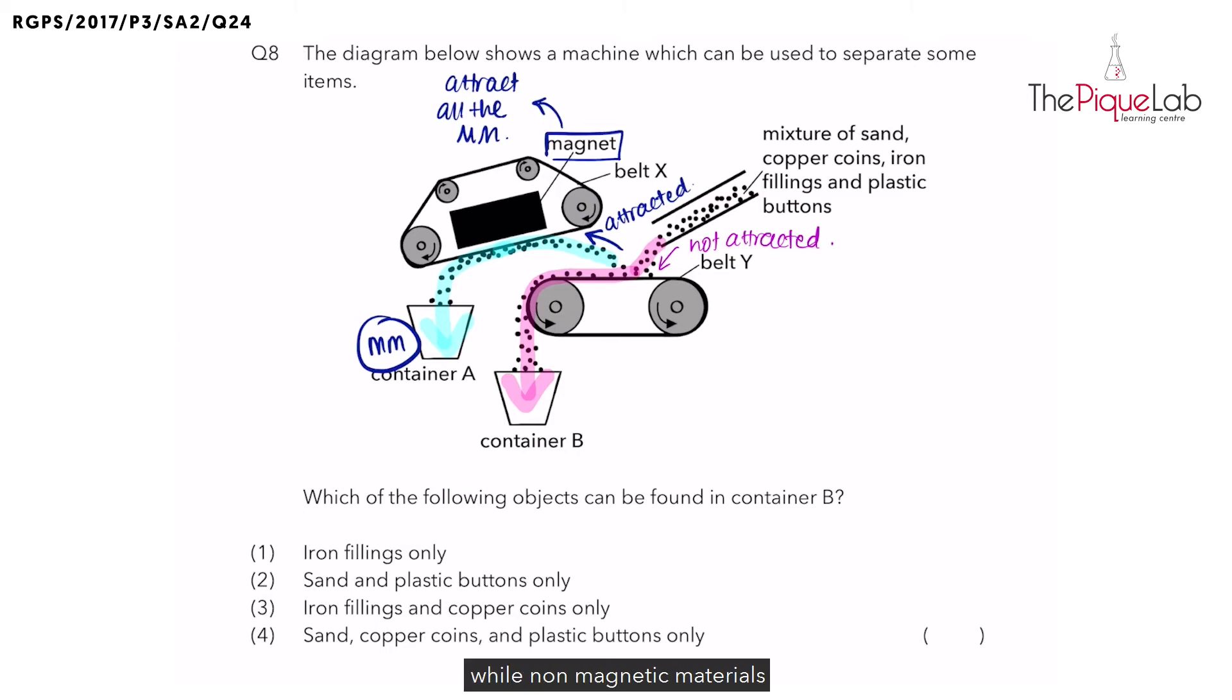So magnetic materials will be collected in container A while non-magnetic materials will be collected in container B. Let's look at the question: which of the following objects can be found in container B? As what we discussed earlier, only non-magnetic materials can be found in container B.